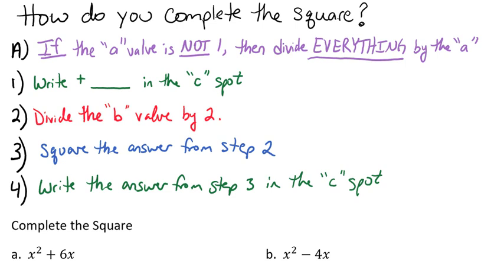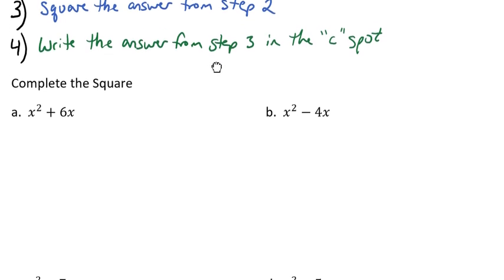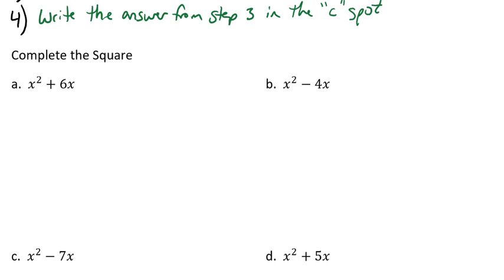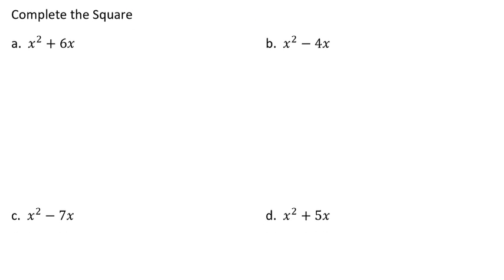Let's go ahead and do some examples where we implement these four steps. So in our first example, we're being asked to complete the square of x squared plus 6x. Notice here that we have an a value of 1, a b value of 6, and we don't have a c value yet. So that's what we're referring to with our a, b, c, and what do we need to do. So because our a value is a 1, we don't have to do that pre-step.